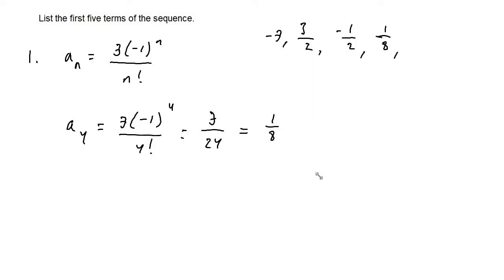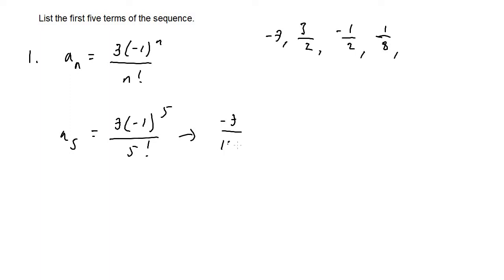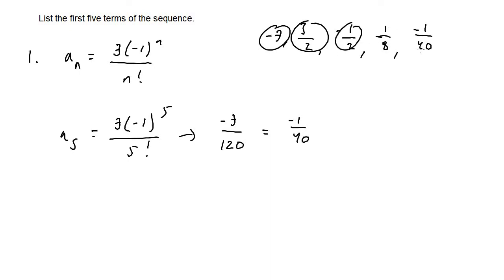For the fifth term a_sub_5, we plug in 5: 3 times negative one to the fifth over 5 factorial. Negative one to the fifth is negative one, so we get negative 3 over 120, which simplifies to negative one over 40. Notice these terms alternate between positive and negative, because of the alternator negative one to the n.